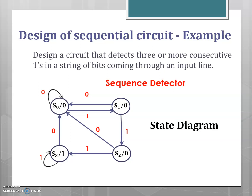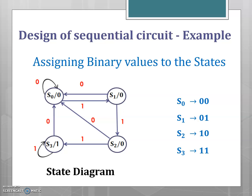This circuit is a sequence detector that detects three or more consecutive ones. Once the state diagram is drawn, the second step is to reduce the states — here there are no equivalent states, so we move on to the third step of binary state assignment. Since there are four states, two bits are used: S0 is assigned 00, S1 is assigned 01, S2 is assigned 10, and S3 is assigned 11.